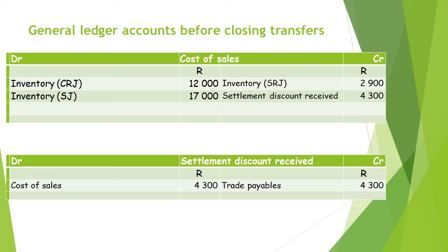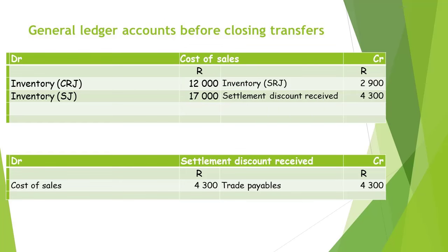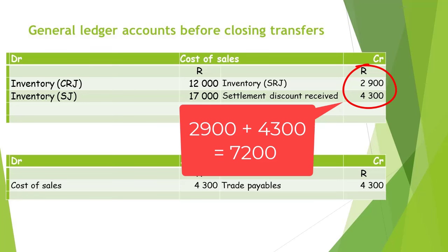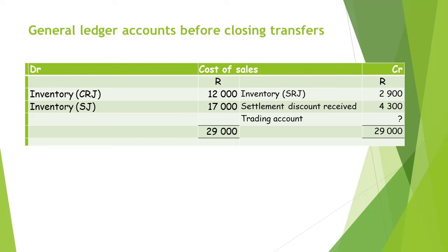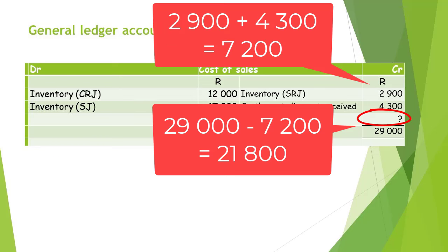The next account that needs to be closed is the cost of sales account. We need to calculate the total of the debit side and the total of the credit side. After adding the amounts on the debit side, the total is 29,000 rand. The total of the credit side amounts to 7,200 rand. We now write the largest of the two totals on both the debit and credit side. Next, we need to calculate the balance of the cost of sales account that will be transferred to the trading account: 29,000 rand less 7,200 rand equals 21,800 rand to be transferred.